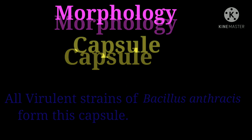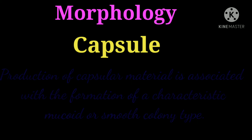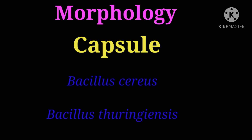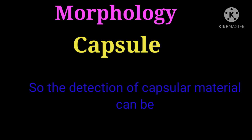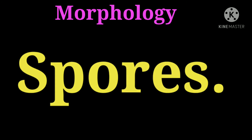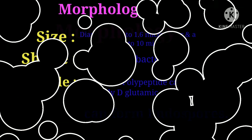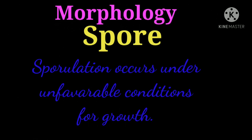All virulent strains of Bacillus anthracis form this capsule. Production of capsular material is associated with the formation of a characteristic mucoid or smooth colony type. Neither Bacillus cereus nor Bacillus thuringiensis synthesizes this capsular polymer, so the detection of capsular material can be used to distinguish Bacillus anthracis from other related Bacillus species.